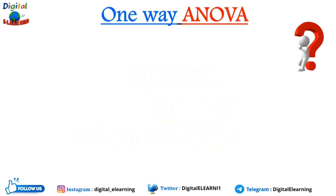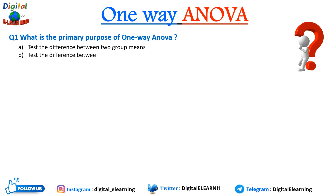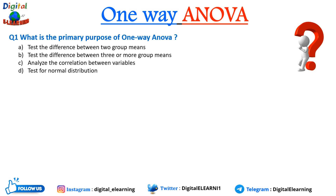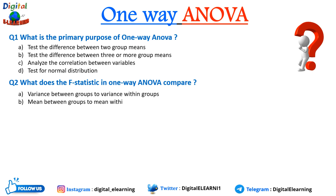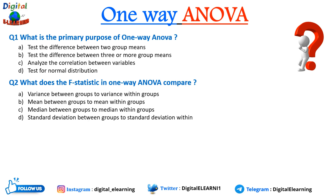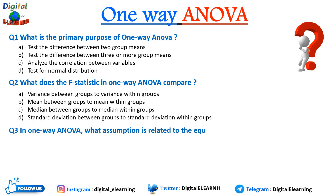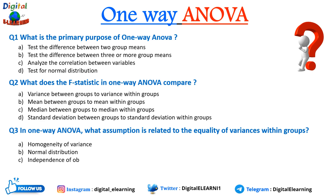Now let's look at some practice questions. Question 1: What is the primary purpose of one-way ANOVA? A) Test the difference between two group means, B) Test the difference between three or more group means, C) Analyze correlation between variables, D) Test for normal distribution. Question 2: What does the F-statistic in one-way ANOVA compare? A) Variance between groups to variance within groups, B) Mean between groups, C) Median between groups to median within groups, D) Standard deviation between groups to standard deviation within groups. Question 3: In one-way ANOVA, which assumption is related to the equality of variance within groups? A) Homogeneity of variance, B) Normal distribution, C) Independence of observations, D) Linearity. Leave your answers in the comment section below.